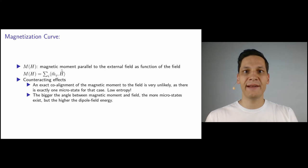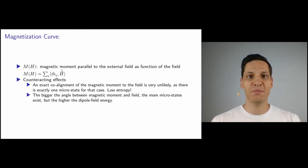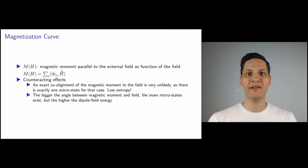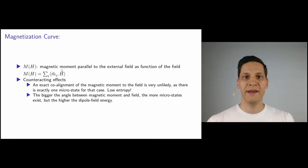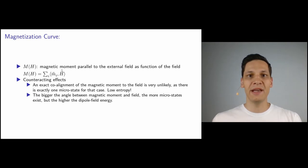To discuss the effect of temperature and entropy in a ferrofluid system, let's look at its magnetization. The magnetization is defined as the net magnetic moment aligned parallel to the external magnetic field. In a simulation, I can sum over all particles, determining the amount of the magnetic moment pointing into the field direction via a dot product. By measuring the magnetization as a function of the applied magnetic field, one obtains the so-called magnetization curve. For any finite temperature, we have two counteracting effects: we could minimize the internal energy by co-aligning all dipoles with the external field.